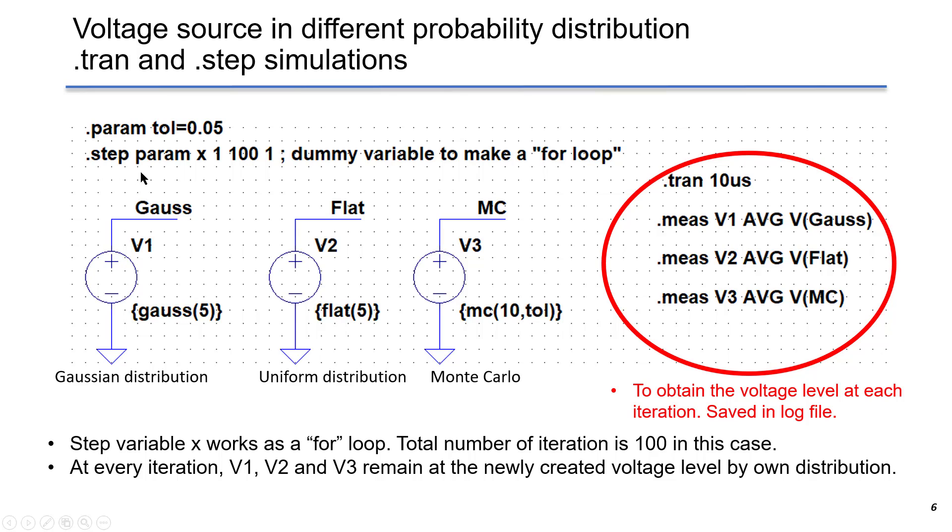We have a parameter as TOL tolerance 0.05. In this example, we have a step function over a parameter x from 1 to 100, and the increment is 1. It works as a dummy variable to make a for loop. So the index x is changing from 1 to 100, which means we run the simulation 100 times. The total number of iterations is 100 in this case.